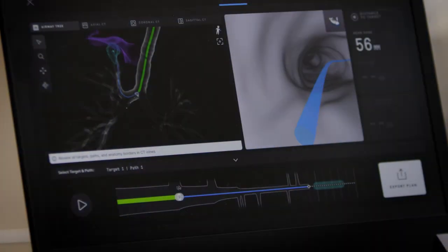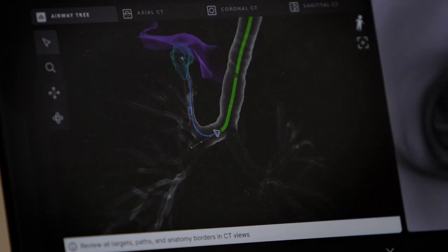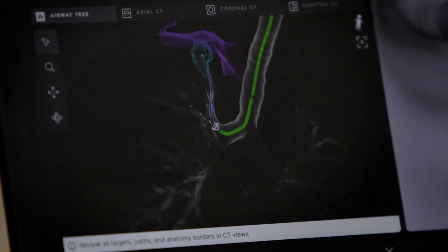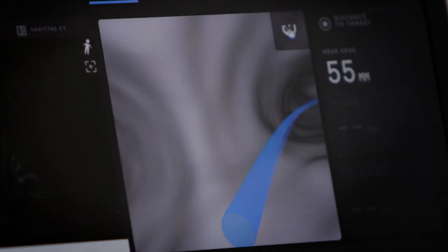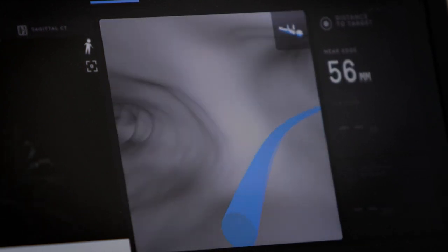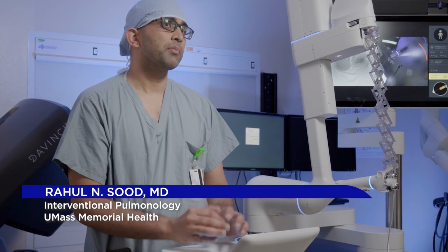Before we start a procedure, the system gives us a GPS view of how we can take each right turn to get to the spot. We make sure we're at the spot and then take those tiny biopsies. The whole biopsy portion of the procedure takes about 10 to 15 minutes.